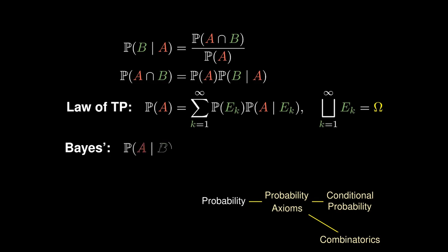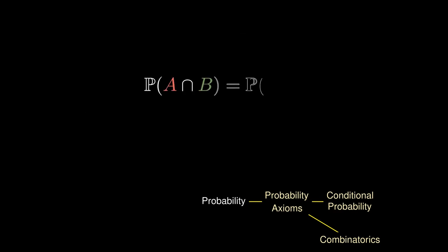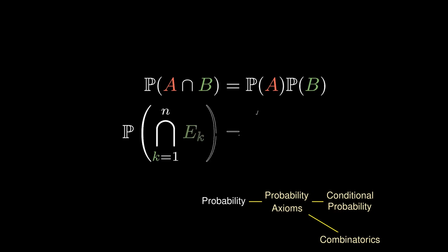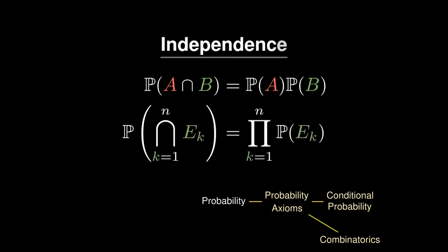In some sense, Bayes' theorem helps us swap conditional probabilities. If, however, the probabilities aren't affected by one another — that is, the probability of the events happening at the same time is simply the product of the individual probabilities — we say that these events are jointly independent, which will be useful for further calculations later on.